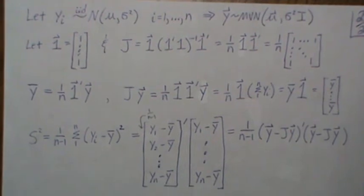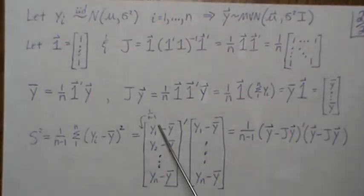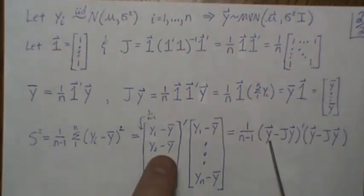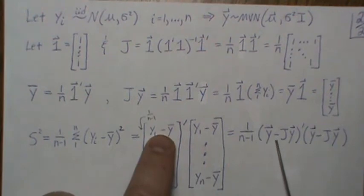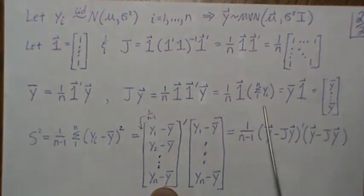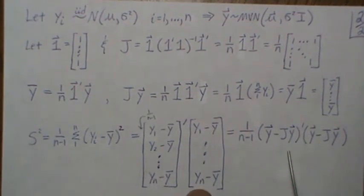But think about this. So this right here, you can think of it as a vector of Y, and then minus a constant vector of Y bar, which we just said was JY. That's this. And then don't forget the transpose. And this right here is Y minus JY.